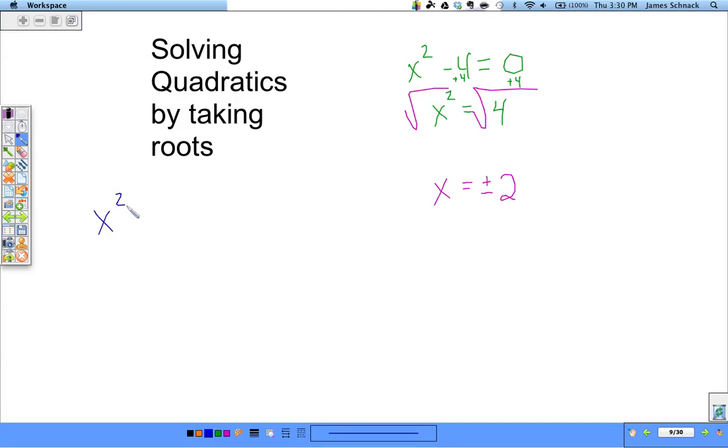If we had x² = 9, we can square root both sides. x equals not just 3, but negative 3 also.